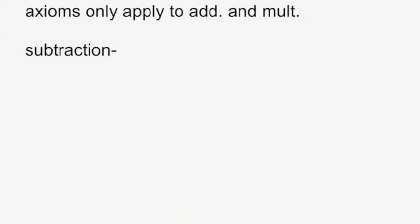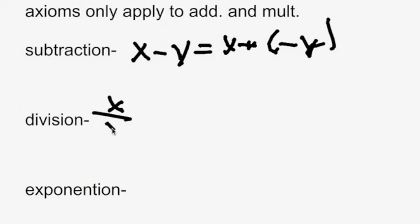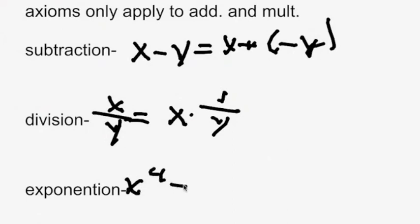The field axioms only apply to addition and multiplication, so you have to rewrite subtraction, division, and exponents in those terms. Subtraction x minus y can be rewritten as x plus negative y, making it addition. Division x over y can be rewritten as x times 1 over y, making it multiplication. An exponent like x to the fourth is the same as x times x times x times x, also multiplication.